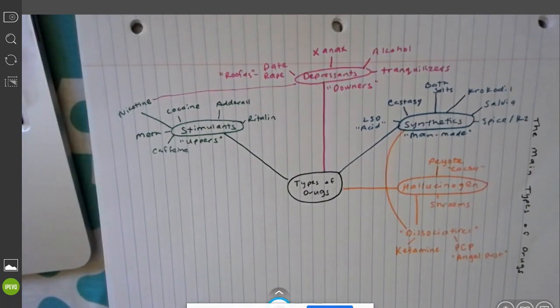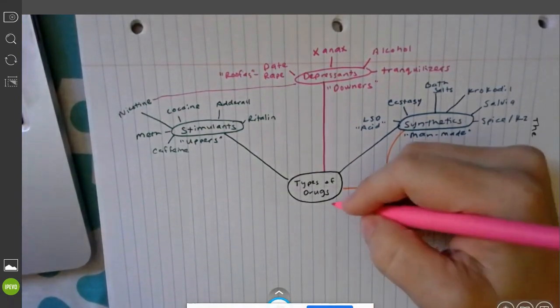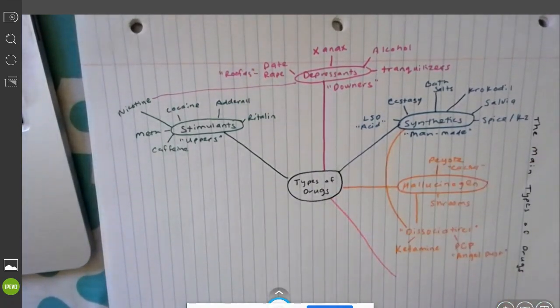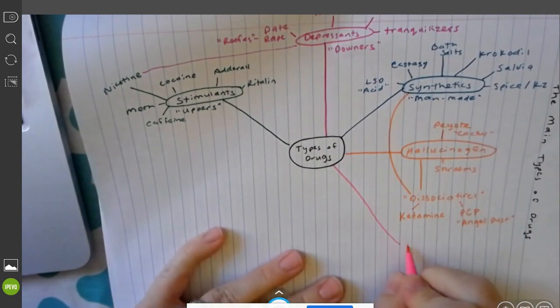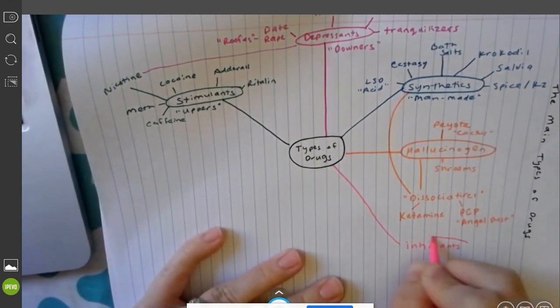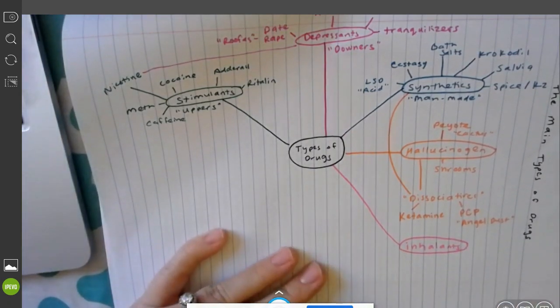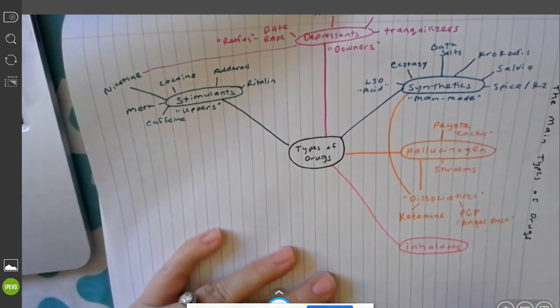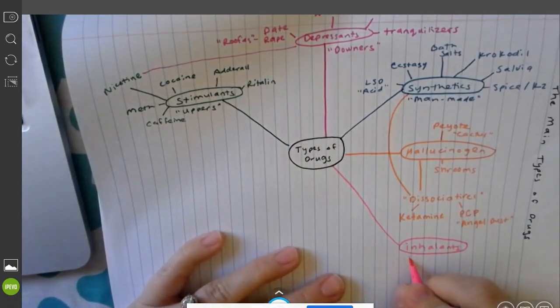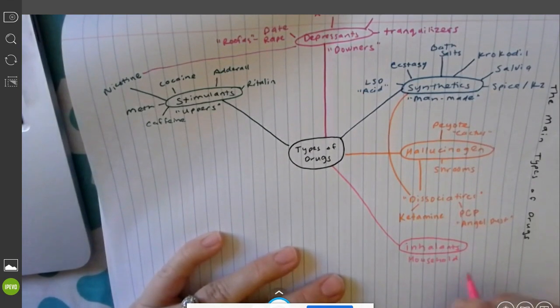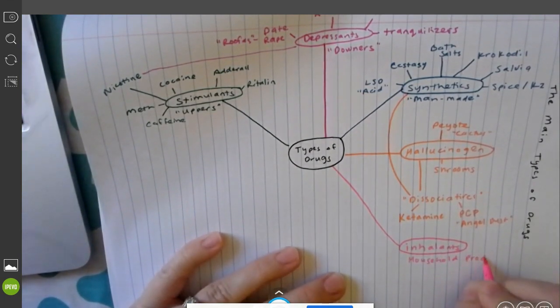The next category that I want to go over is a drug found a lot in younger middle school students and this would be something called inhalants. Inhalants are anything that someone would sniff, snort, put in a paper bag and put over their mouth so they can achieve some sort of a high. So these are just household products like glue, aerosol cans, things like that. Household products that someone would sniff intentionally to get high.